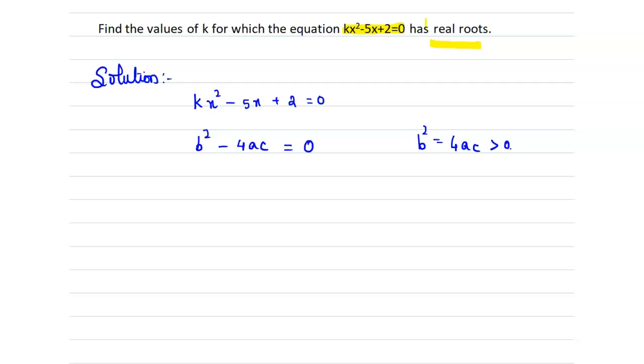So because it is not given clearly whether there exists two distinct roots or two equal roots. Suppose if it is equal roots then we can go with this discriminant equation or otherwise if the roots are distinct then we can go with this equation.